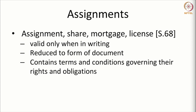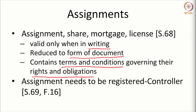An assignment — whether you give the entire patent by way of sale or share an interest in the patent such as a license — must be in writing. Law requires assignments to be in writing and reduced to the form of a document. The terms and conditions should be clearly stipulated and the rights and obligations of the parties must be mentioned. The assignment deed also needs to be registered and the controller must be informed about the assignment.